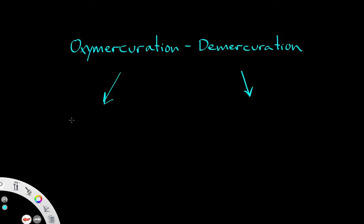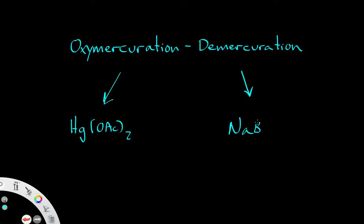With oxymercuration, we are going to see mercury(II) acetate, which is basically a metal ion that's going to serve as our electrophile in this chemical reaction, while sodium borohydride is going to serve in the demercuration part of the reaction.